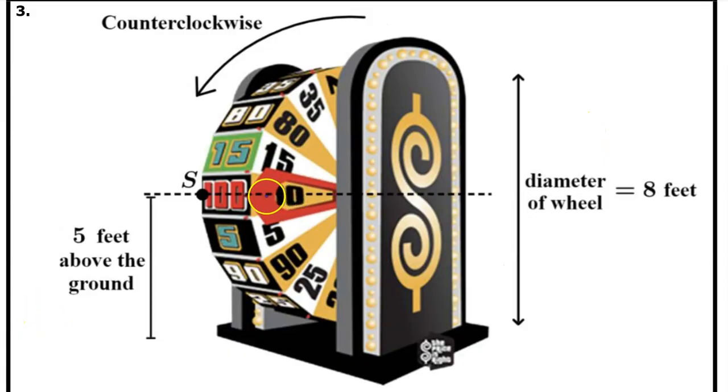The pointed indicator is at the center of the circle and point S will periodically fall below the indicator and rise above the indicator. So the height of the indicator will be the midline of the graph. According to the diagram, the pointed indicator is five feet above the ground. So the midline is at five feet.